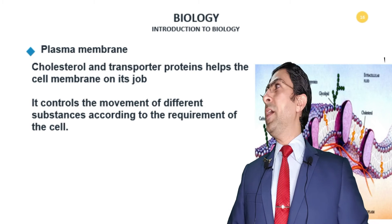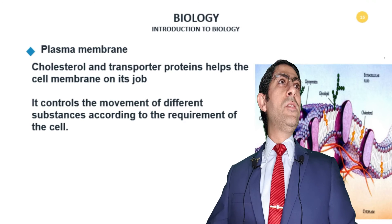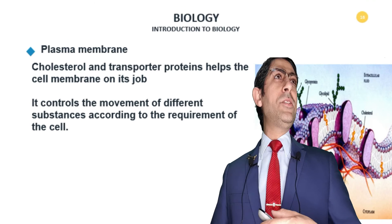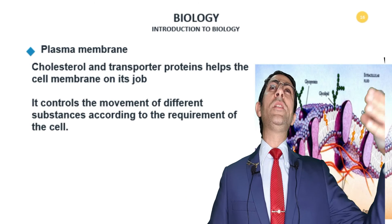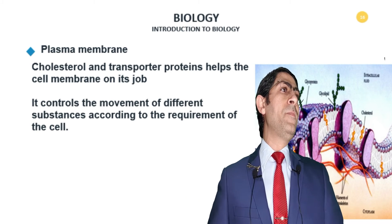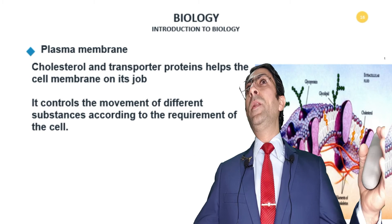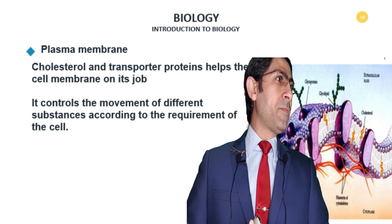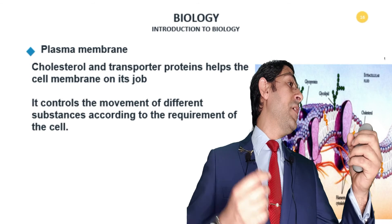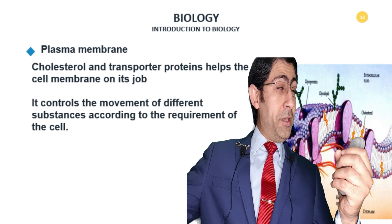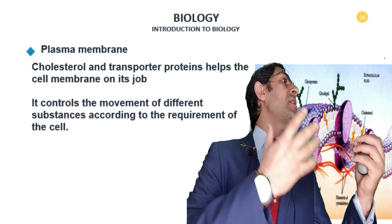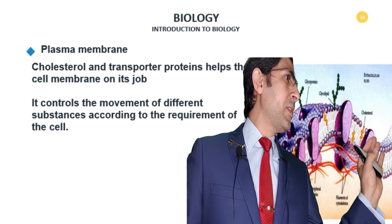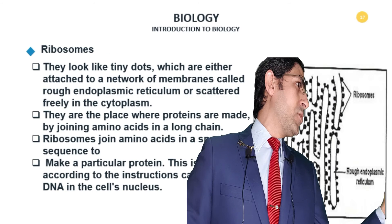Ribosomes look like tiny dots which are either attached to the endoplasmic reticulum — making it rough endoplasmic reticulum — because the ribosomes are attached to the surfaces like beads on a smooth surface. That's why it's no longer smooth; it's rough.